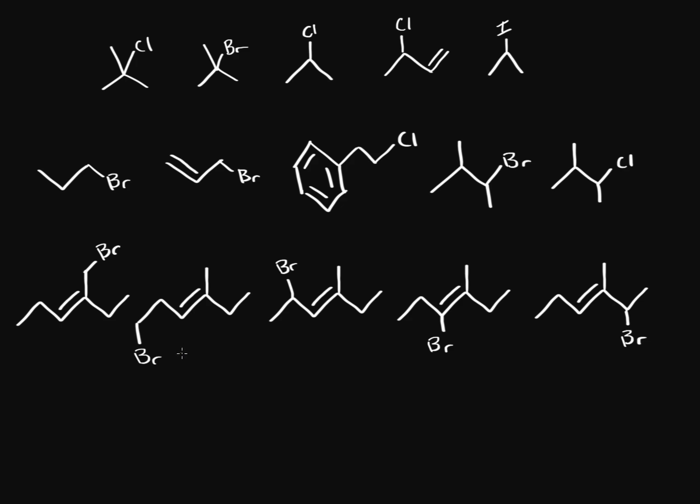In this practice we're going to rank molecules by SN1 reactivity. If you recognize the SN1 reaction mechanism, you form a cation as an intermediate. So when looking at SN1 reactivity, we're going to consider two things: number one, the leaving group, and more importantly, number two, the cation stability — how stable the cations are.